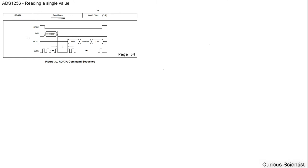Here you can see the timing or the command sequence. What happens is that when data ready goes low, we can read a single conversion result based on the RDATA command. Data ready goes low, then we submit the RDATA command, and then we have to wait T6. Then we step out the 24 bits, which consists of 3 bytes: the MSB, the mid-byte, and the LSB. After we finish, data ready goes back high and the device is ready for a new reading.